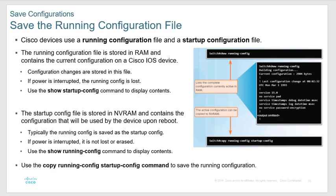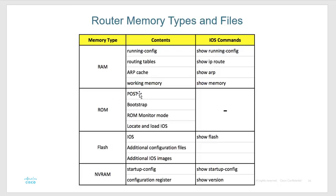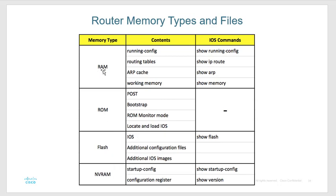Your router has four different types of memory. ROM has the power-on self-test and the bootstrap — how to boot and where the operating system is. Flash has the IOS, the operating system — you can see files on flash with 'show flash'. NVRAM is non-volatile RAM where the startup configuration is stored — 'show startup-config'. RAM is where the running config lives — 'show running-config' or 'show run'. Make sure you know those four locations: ROM is POST and bootstrap, flash is the IOS, NVRAM is the startup config, and RAM is the running config.